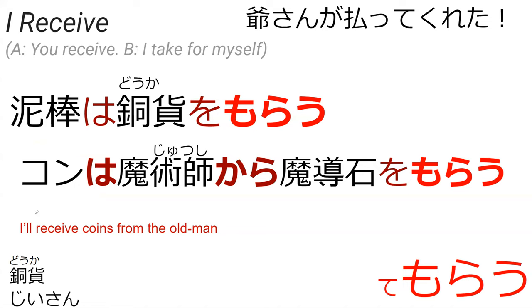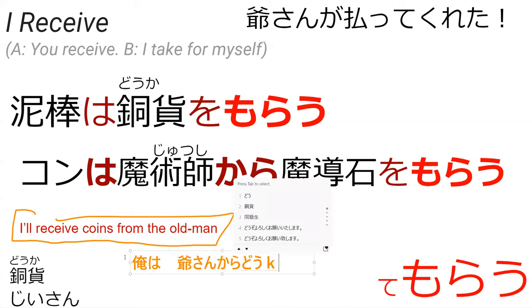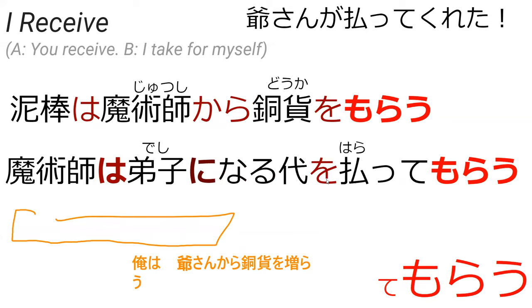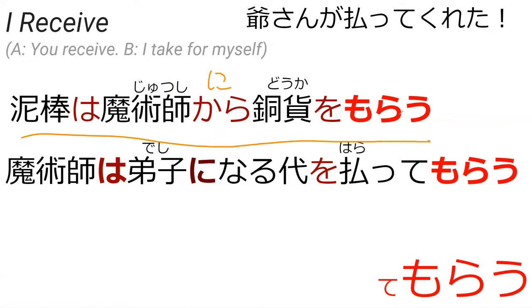So how would you say I'll receive coins from the old man? Ore wa is great — ore wa ojii-san kara douka o morau. Perfect — 100% correct. Now, building off of that, I had kara right here because I find that's easier when you're first learning this. Instead of kara you can use ni — so this sentence could be dorobo wa bajutsu-shi ni douka wo morau — and it's exactly the same. There is no difference between these two sentences except that kara is easier for Japanese learners to remember.